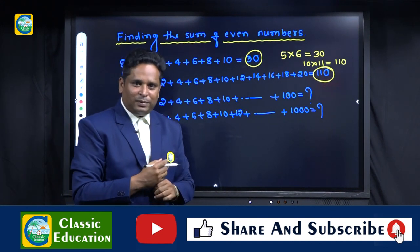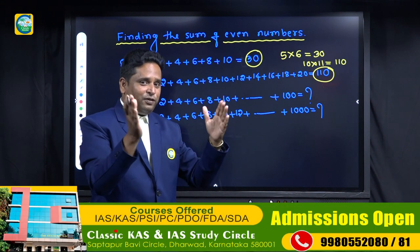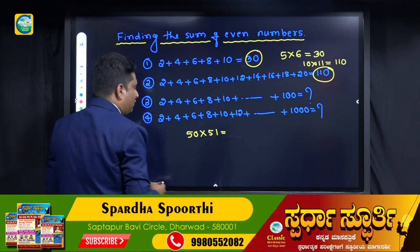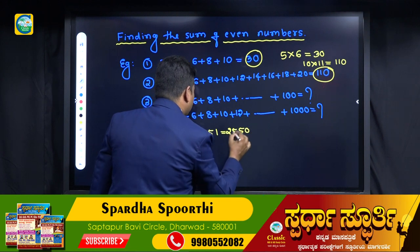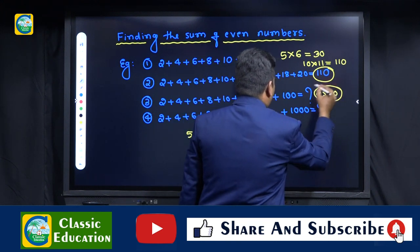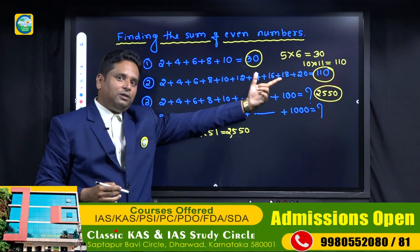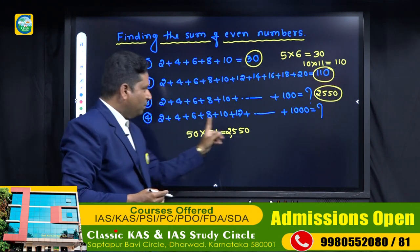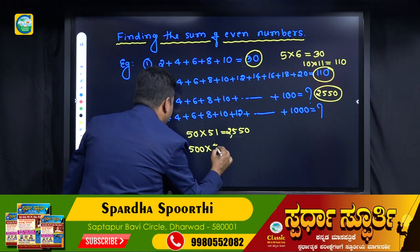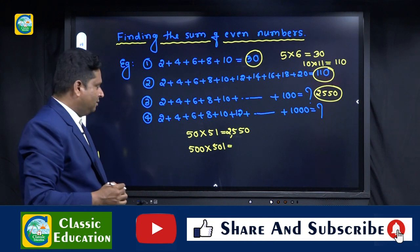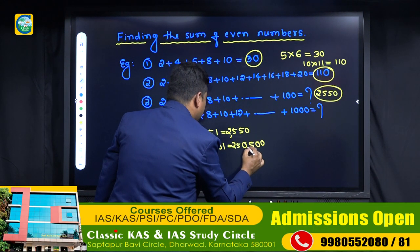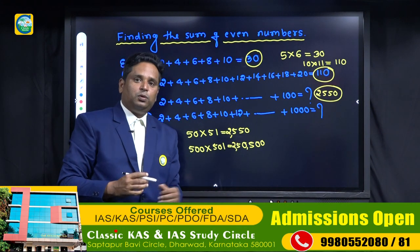From 2 to 100, how many even numbers are there? 50. What is the next number after 50? 51. Multiply 50 and 51: 5 × 1 = 5, 5 × 5 = 25, add one zero — giving 2,550. From 2 to 1000 there are 500 even numbers. Next number is 501. Multiply 500 × 501: 5 × 1 = 5, 5 × 5 = 25, add two zeros — giving 2,50,500.